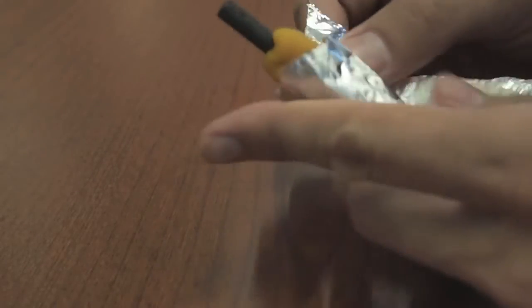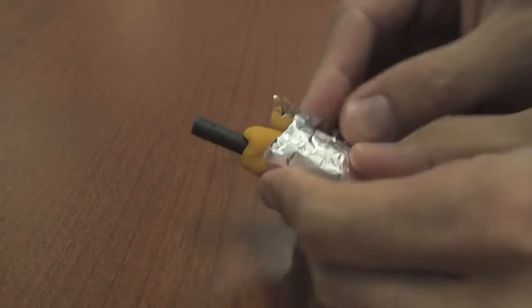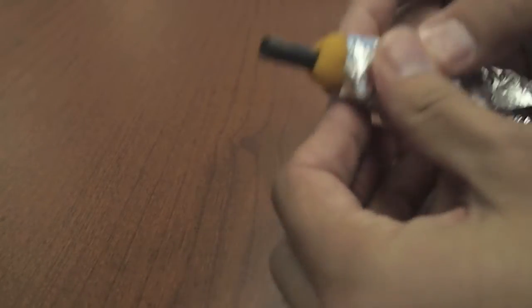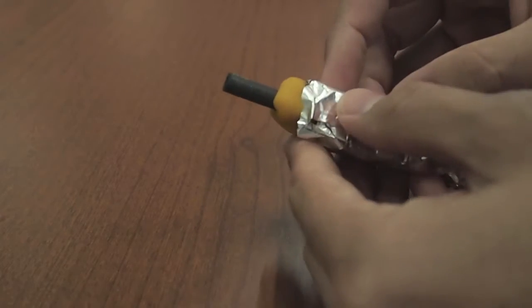And then you take your aluminum foil and you wrap it around the dough. I like to leave a little bit of space to make sure I don't short-circuit my battery.